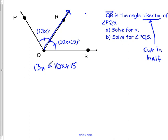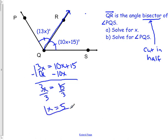We'll subtract 10x from both sides. And we get 3x equals 15. And then we divide by 3. And we get x equals 5. So in this case, x is 5. Okay, so we got this part down.